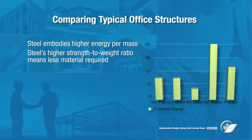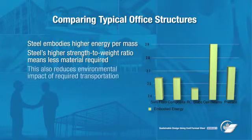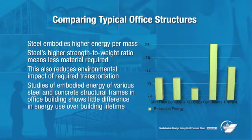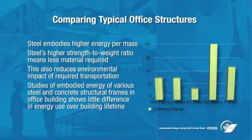Although steel embodies more energy per unit of mass than other structural materials, its high strength-to-weight ratio means considerably less volume of material is required for the structure of a building, which also reduces the environmental impacts of transportation. A life cycle study comparing four- and eight-story office buildings shows little significant difference between the embodied energy values for five alternate types of steel and concrete structures, suggesting that the structural frame material chosen has little significance on energy use over a building's lifetime.